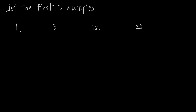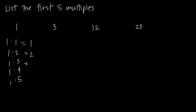In other words, what I want to do to find the multiples of a number is multiply the given number — in this case 1 — by 1, by 2, by 3, by 4, and by 5, because we've been asked to find the first 5 multiples. So 1 times 1 is equal to 1, 1 times 2 is equal to 2, 1 times 3 is equal to 3, 1 times 4 is equal to 4, and 1 times 5 is equal to 5.